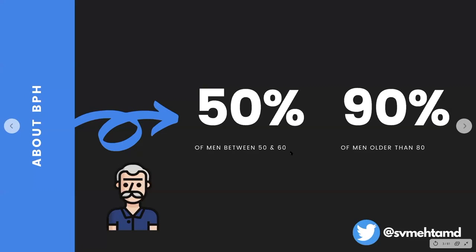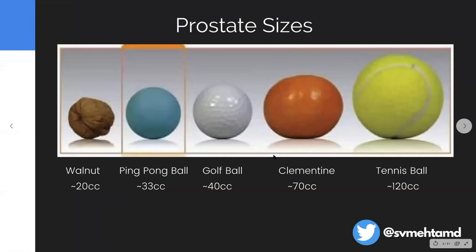About BPH: 50% of men between 50 and 60 have it, and 90% of men older than 80. Essentially everybody is going to get BPH, and that is a huge, fertile opportunity for us as interventional radiologists to get involved in a disease process that involves quite literally half the population. Because it involves half the population, we can really play a great role with this innovative procedure.